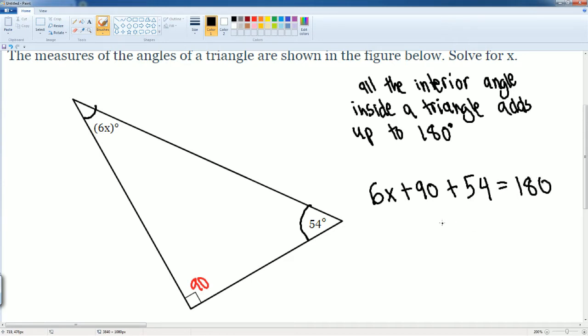We can now combine some like terms. So the 90 plus 54, that gets us 144. Bring everything else down. So we bring down the 6x plus 144 is equal to 180.